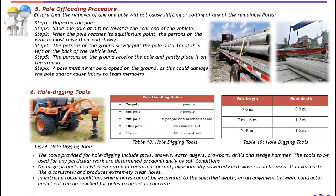Pole off-loading procedure. Ensure that the removal of any one pole will not cause shifting or rolling of the remaining poles. Step 1: unfasten the poles. Step 2: slide one pole at a time towards the rear end of the vehicle. When the pole reaches its equilibrium point, the person on the vehicle must raise their end slowly. The person on the ground slowly pulls the pole until one meter of it is left on the vehicle bed. The person on the ground then receives the pole and gently places it on the ground. A pole must never be dropped on the ground as this could damage the pole or cause injury to team members.